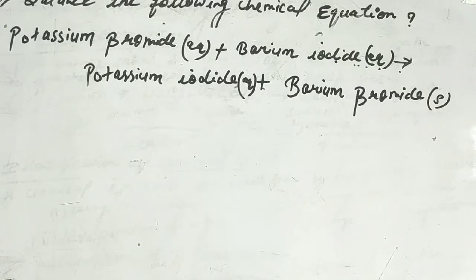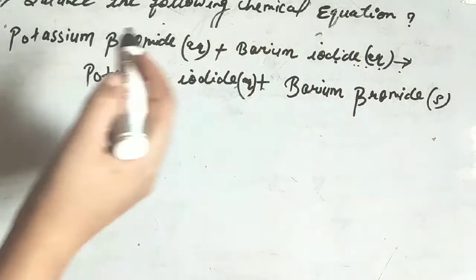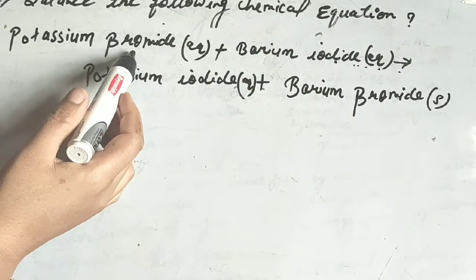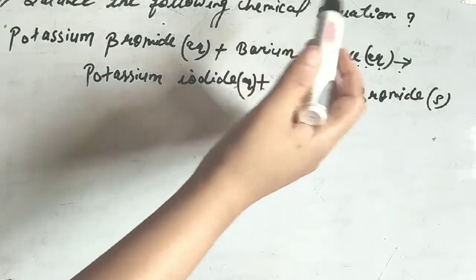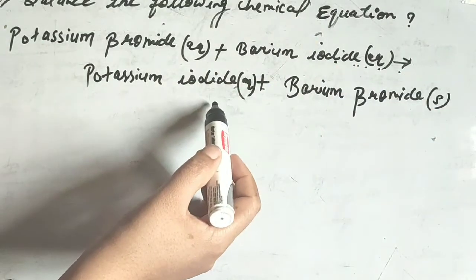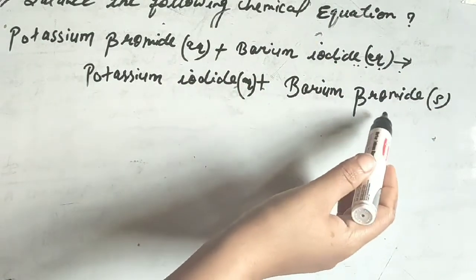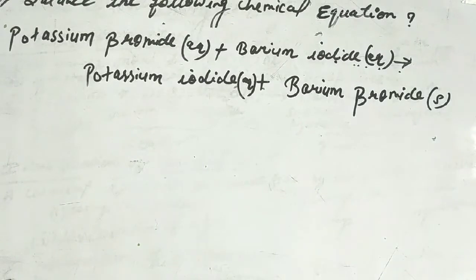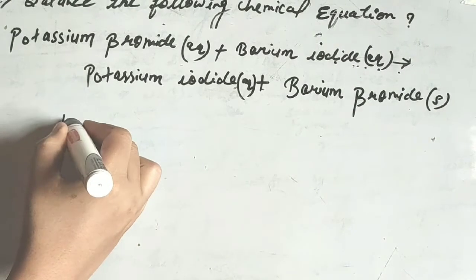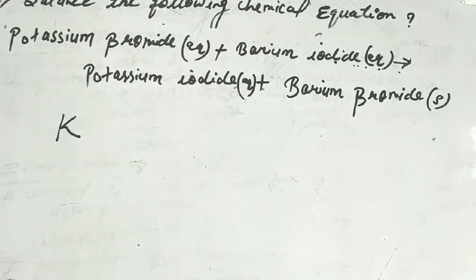Alright, question: balance the following chemical equations. First one — potassium bromide plus barium iodide in aqueous form gives potassium iodide in aqueous form plus barium bromide in solid form.